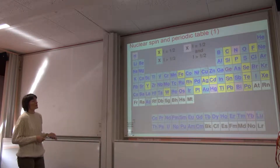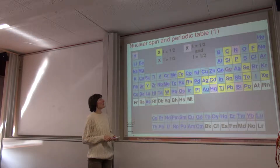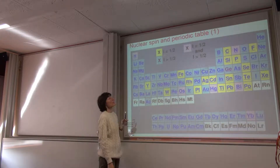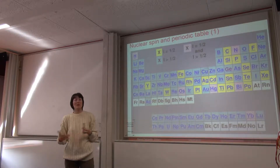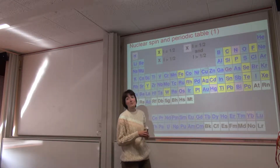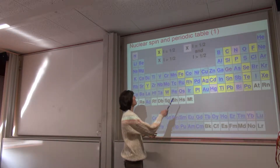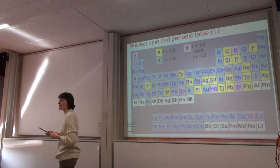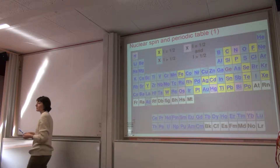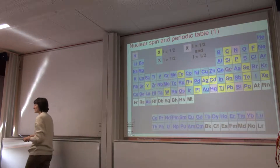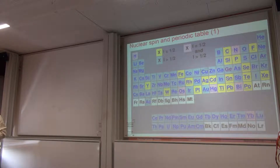Looking at the periodic table, it's important to consider why quadrupolar nuclei matter. The bright yellow nuclei are spin-one-half — there are quite a few but not that many. There is just a handful of nuclei for which both spin-one-half and spin larger than one-half exist; proton and nitrogen are among these. But the vast majority of nuclei in the periodic table are only available as quadrupolar nuclei. The white ones exhibit no spin at all.